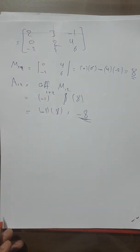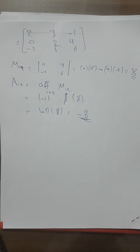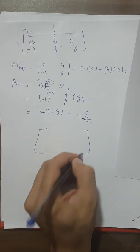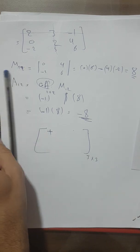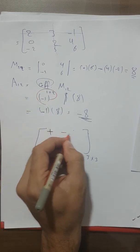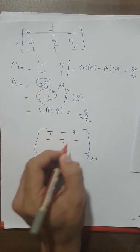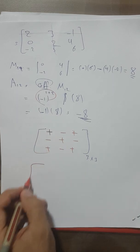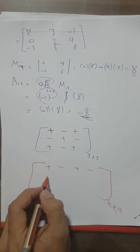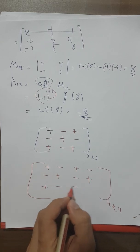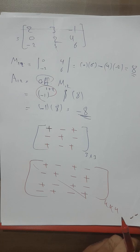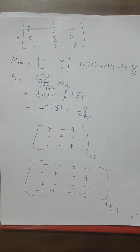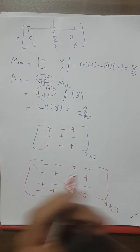There's an important shortcut for finding cofactor signs. Instead of computing (-1)^(i+j) every time, use the checkerboard pattern. For a 3×3 it is: + − + / − + − / + − +. For a 4×4 it extends as: + − + − / − + − + / + − + − / − + − +. This checkerboard pattern gives you the sign for each cofactor directly.